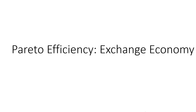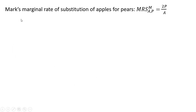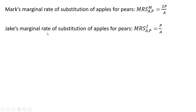In this video, we're going to look at Pareto efficiency and the exchange economy. Mark's marginal rate of substitution of apples for pears is given by the following, where P represents the number of pears and A represents the number of apples. Jake's marginal rate of substitution of apples for pears is just pears divided by apples.